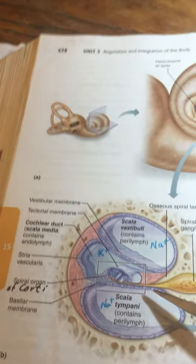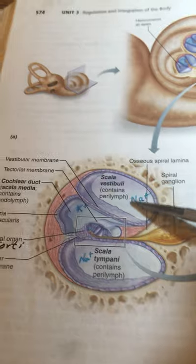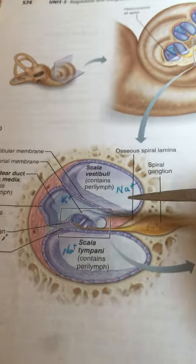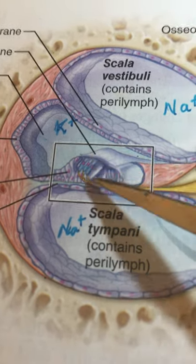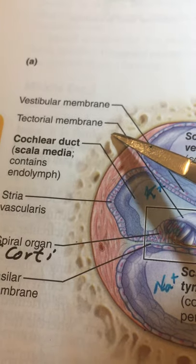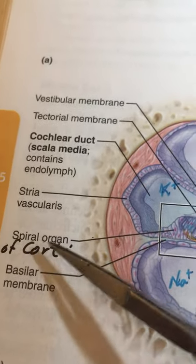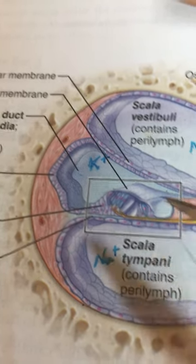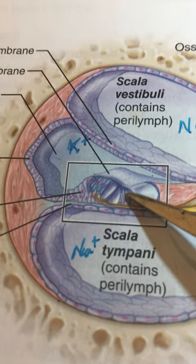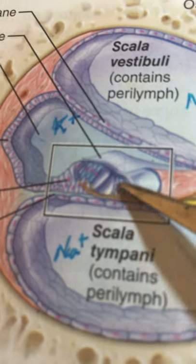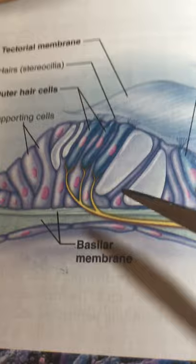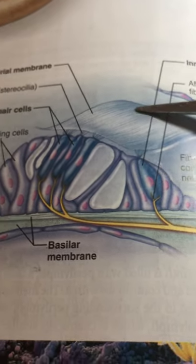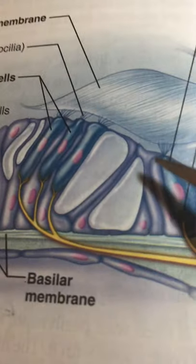Now let's look at the details of any given cross-section cut through the cochlea. It has three tubes as noted before. The key business spot is referred to as the spiral organ of Corti. It's spiraling around, carrying the nerve endings and the transduction areas — the receptors for sound. Here's the magnification of that spot inside the scala media.